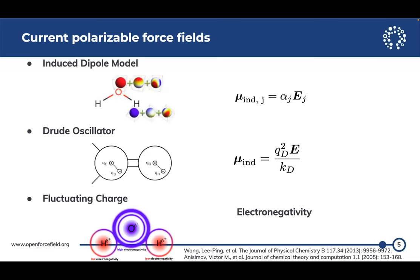For the current models, we already have three: the induced dipole model, which is widely used in AMOEBA — this figure is taken from the AMOEBA water model — where induced electronic polarization is included using the induced dipole. Another popular polarizable force field is the Drude polarizable force field, which includes dummy atoms next to the parent atoms to include induced dipoles and electronic polarization. And another one is fluctuating charges, based on electron electronegativities.